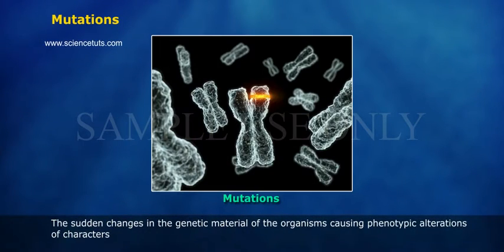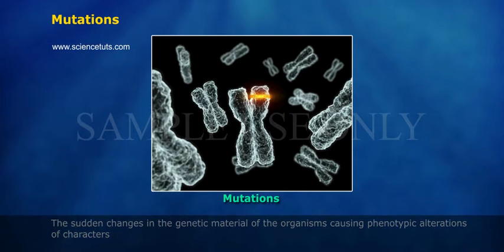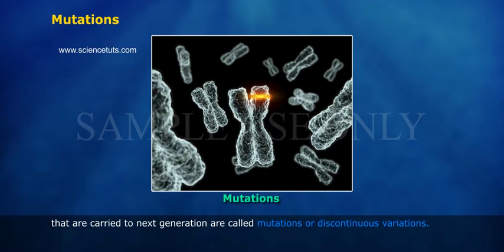The sudden changes in the genetic material of organisms causing phenotypic alterations of characters that are carried to the next generation are called mutations or discontinuous variations.